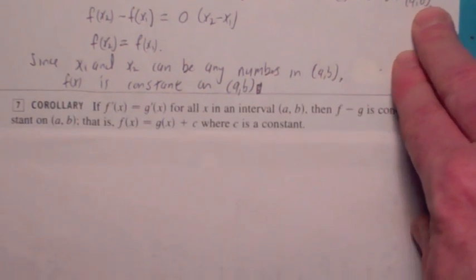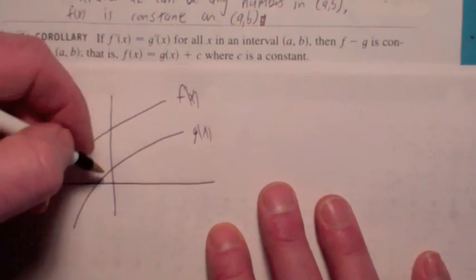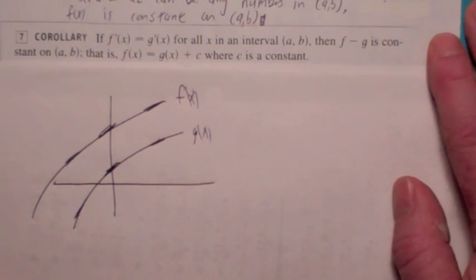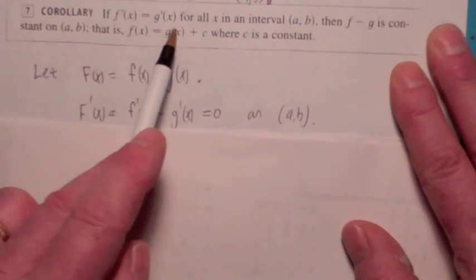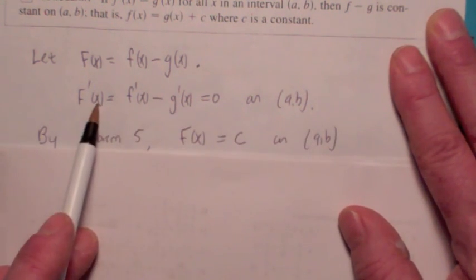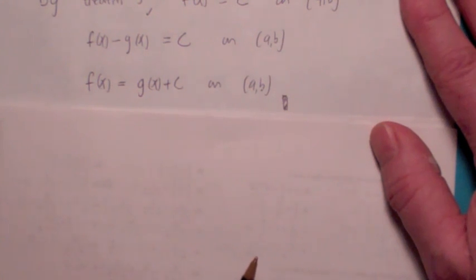This next fact is really useful — you'll encounter it early in Math 152. Suppose two functions have the same derivative for all x in (a, b). Then one must be a constant added to the other — a vertical shift. To prove this, let F(x) = f(x) − g(x). Since f'(x) = g'(x), the derivative F'(x) = f'(x) − g'(x) = 0. By the theorem we just proved, F must be a constant, meaning f(x) − g(x) is constant, so f(x) = g(x) + C for some constant C. That's what we wanted to show.